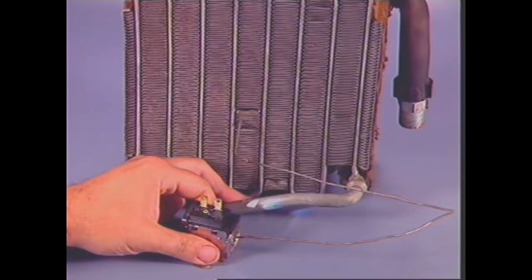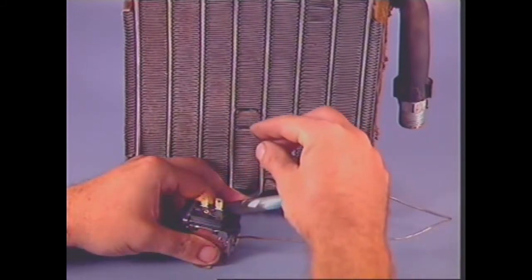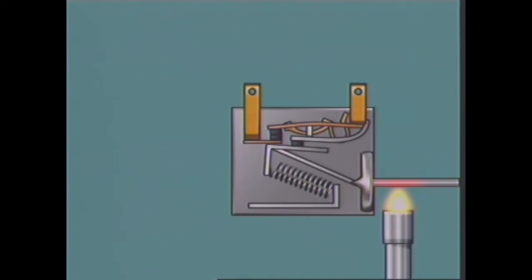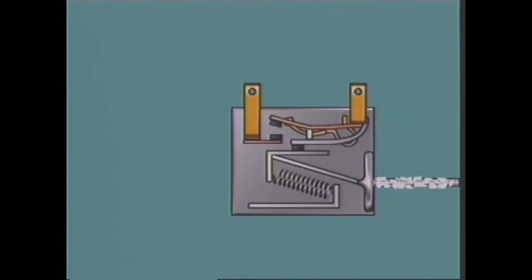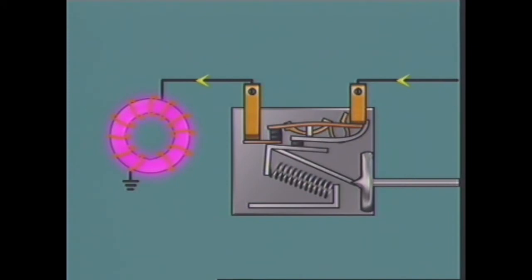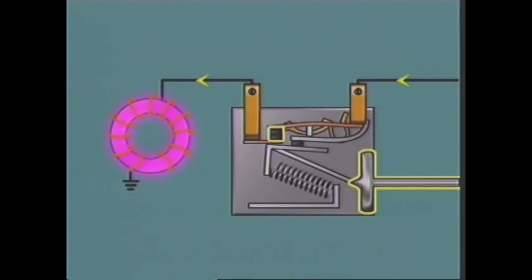The bellows type thermostat has a capillary tube placed about 25 millimetres into the evaporator core so that it contacts the fins. The capillary tube and bellows are sealed and filled with a temperature-sensitive fluid which expands and contracts with temperature changes, increasing or decreasing the pressure in the bellows. The bellows is positioned to open and close a set of contacts which form part of the electrical circuit to the compressor clutch. Springs connected between the bellows contact frame and the thermostat housing try to keep the contacts open, while pressure in the bellows tries to force the contacts closed.